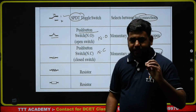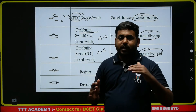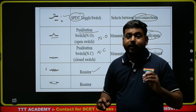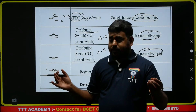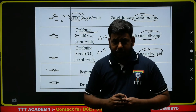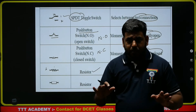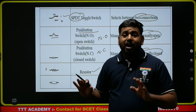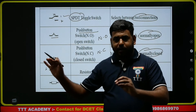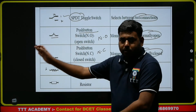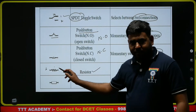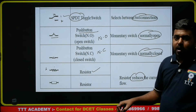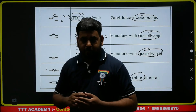Next, resistor. A resistor opposes the flow of current and controls it, reducing the current. Resistor has no polarity — no positive or negative terminal — because it does not control the charges, only opposes the flow of current. So, a resistor can be connected either way and performs the same function. It reduces, opposes, or controls the flow of current.